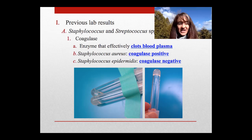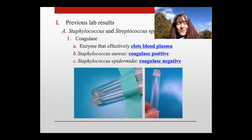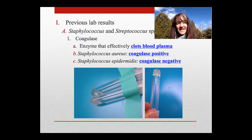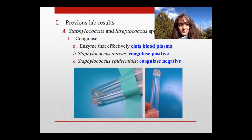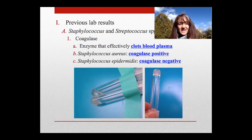You need to differentiate in a couple of different ways. Salt tolerance was one that we talked about — put it on an MSA. We also talked about looking for the catalase magic bubbles. And of course, once you do get those bubbles and you know you have a staph, remember that the effective way of definitively identifying Staphylococcus aureus is the coagulase test.